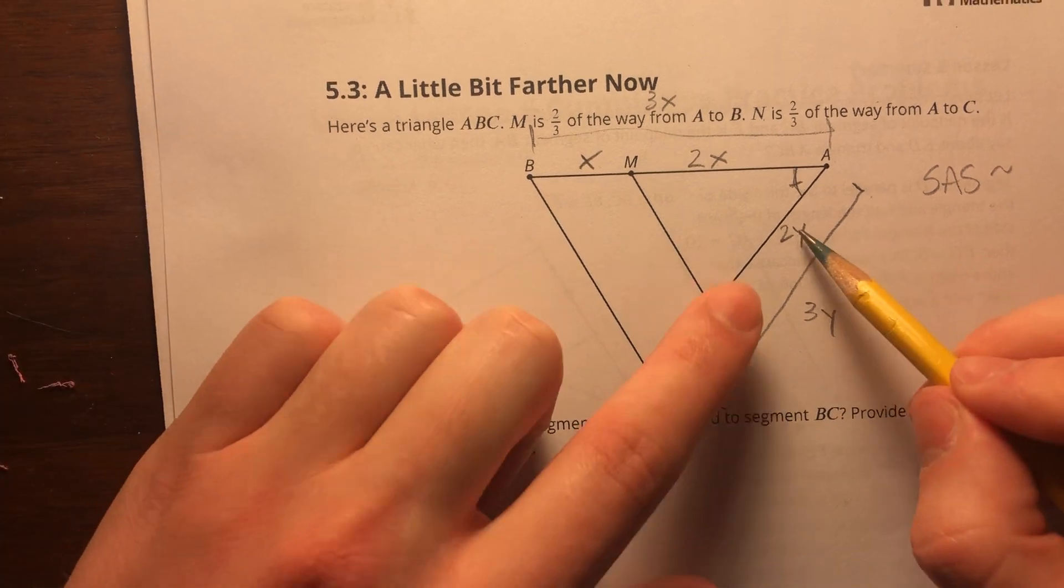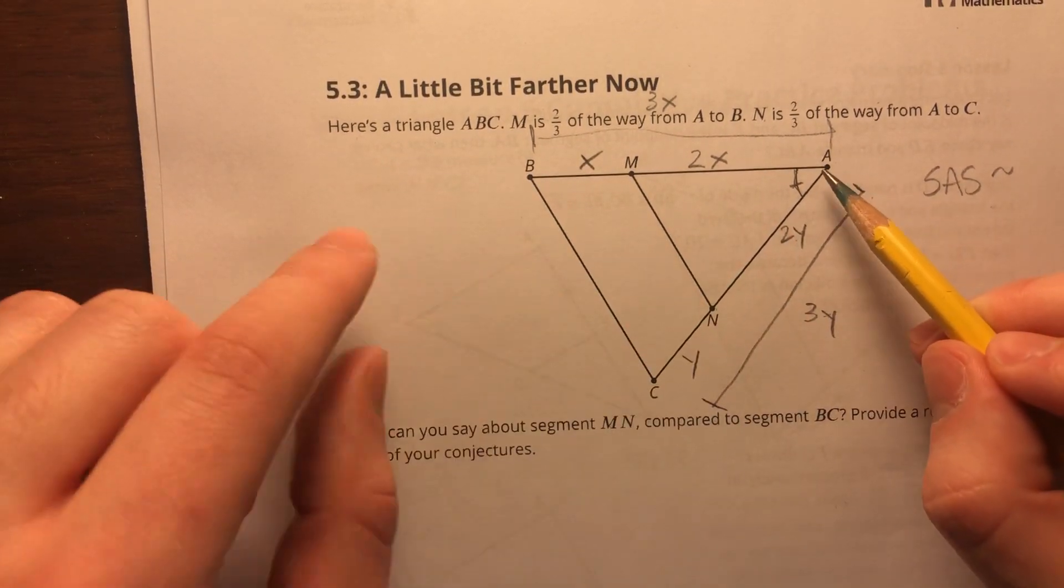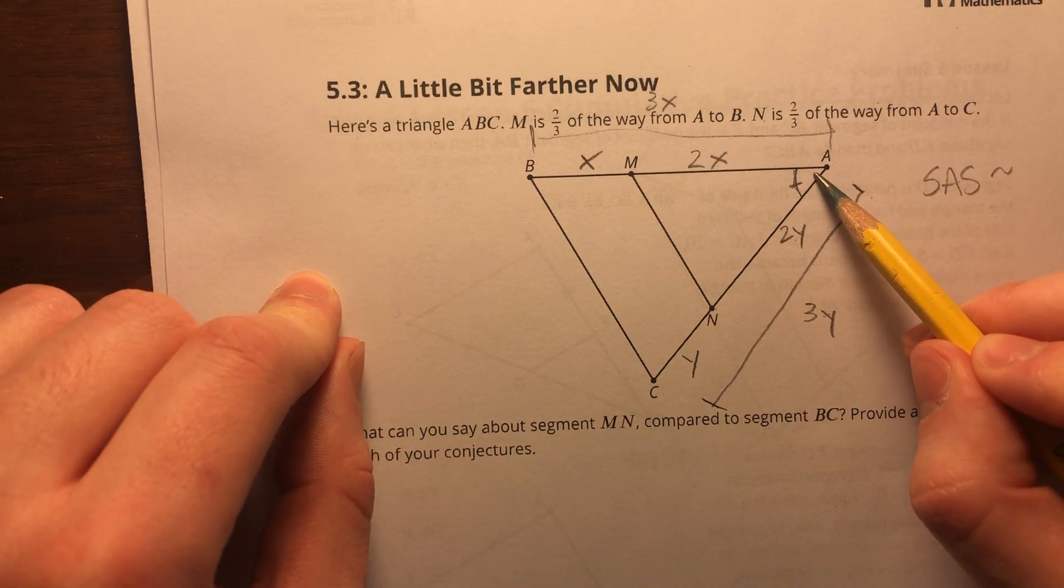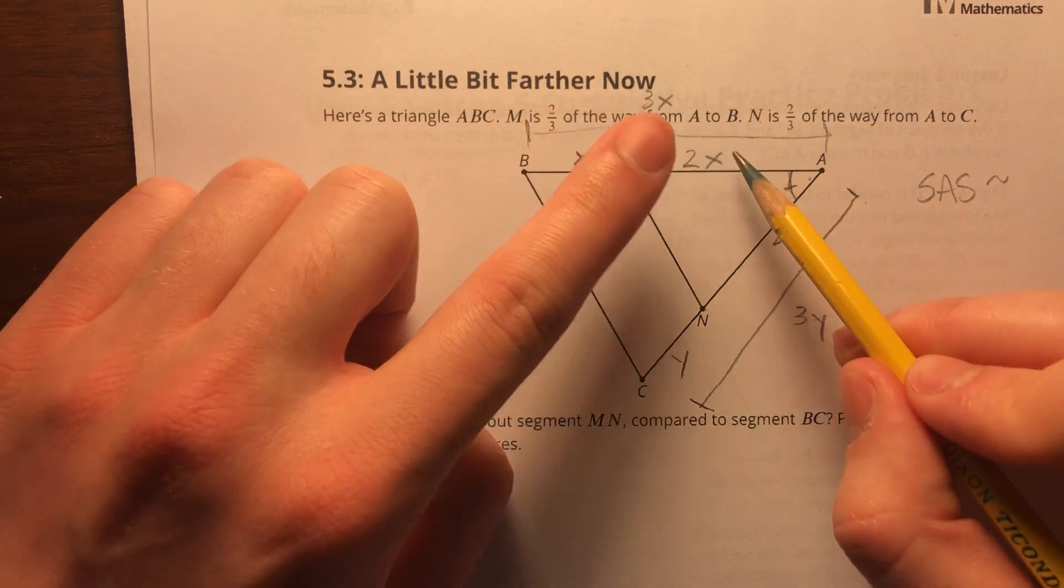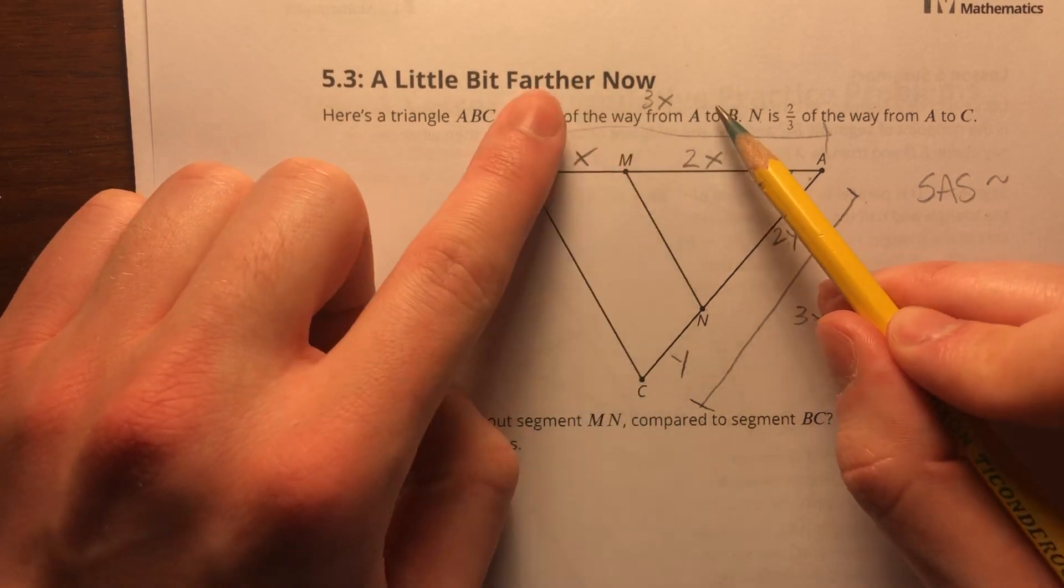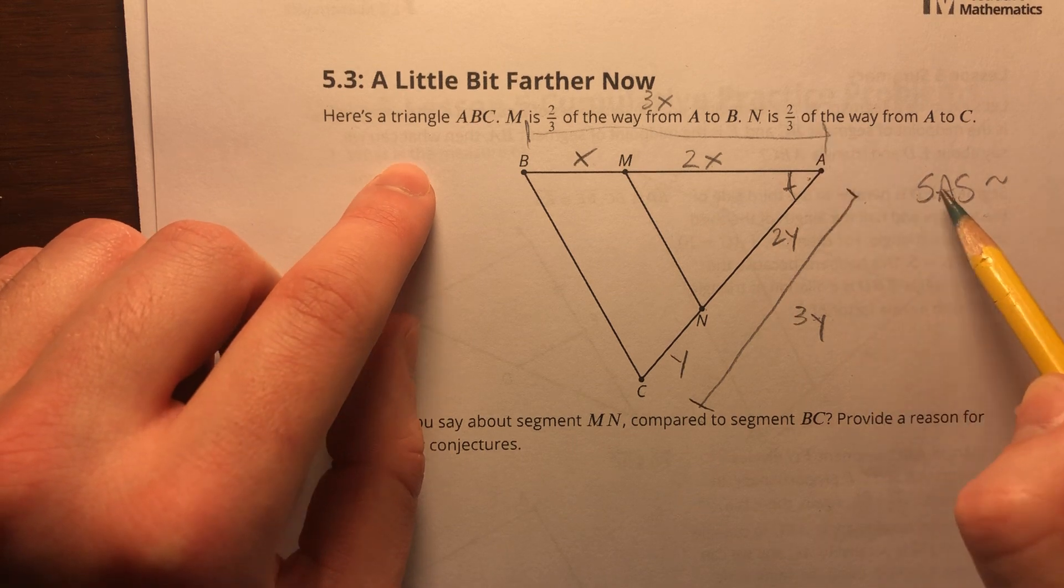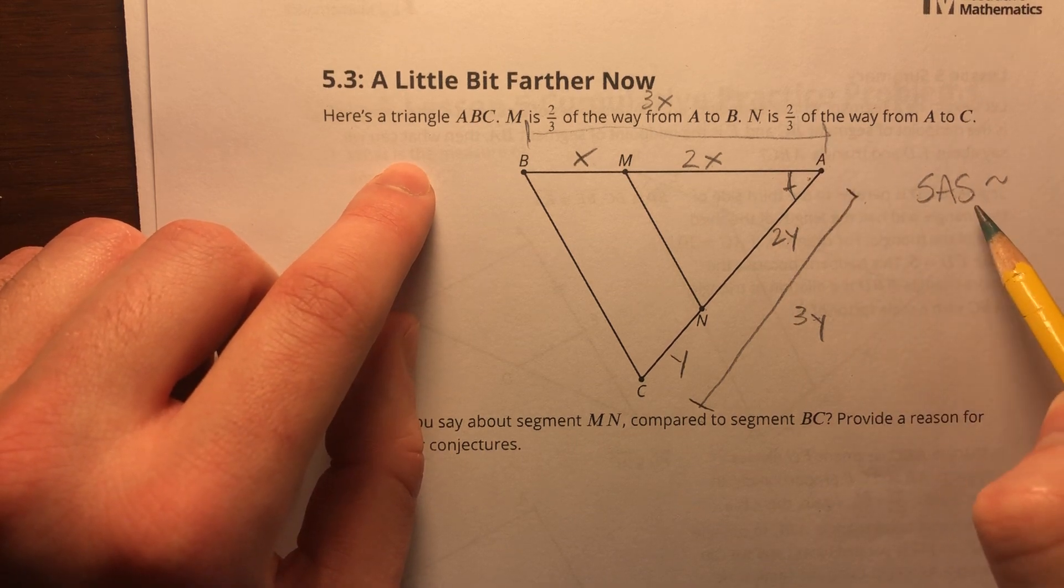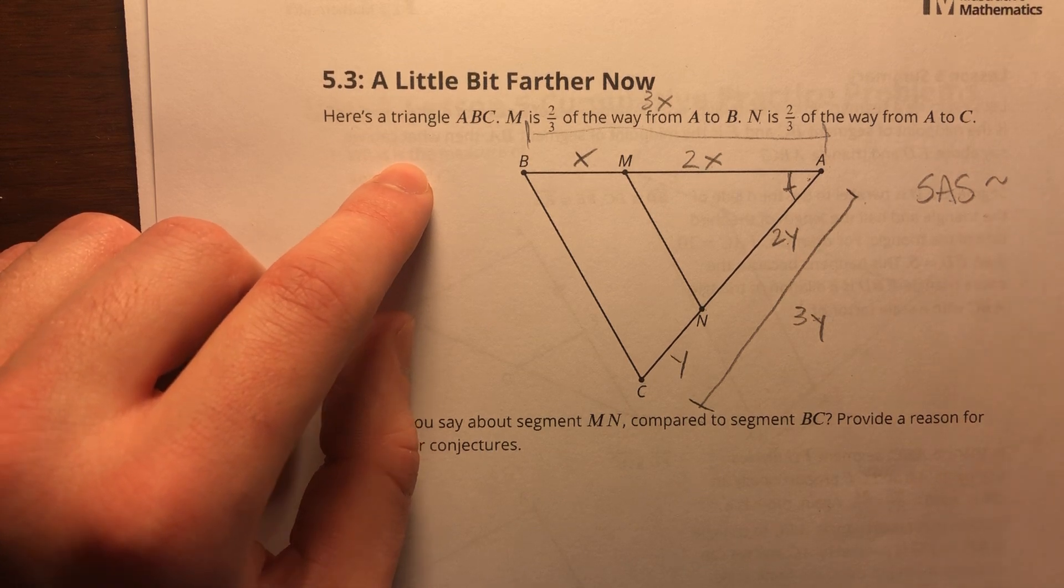Side, 3y and 2y are in proportion of 2 over 3. Angle, this angle A is congruent to itself in both triangles. The second side, 2x over 3x, will give me that same scale factor of two-thirds. So I've got two sides that are proportional, and then one angle in the middle that's congruent. So the two triangles are similar by SAS.